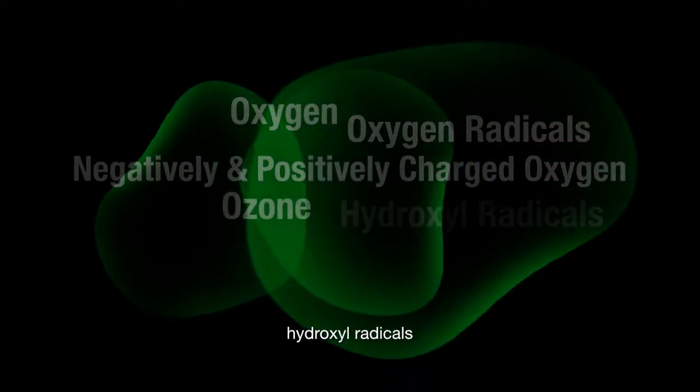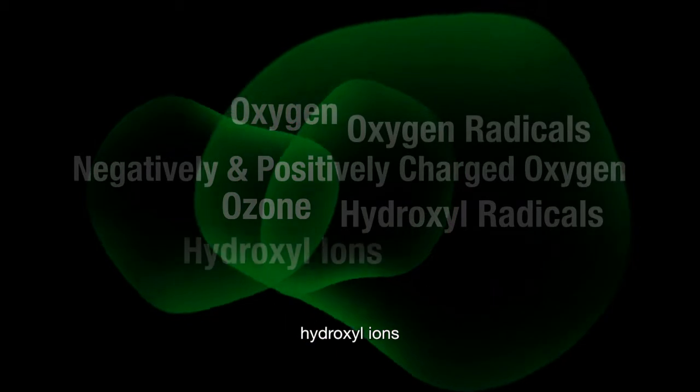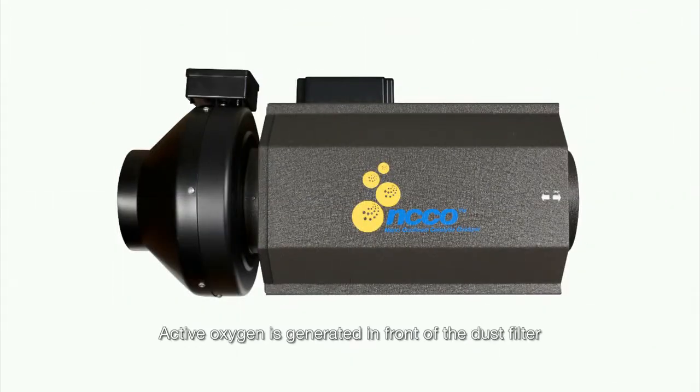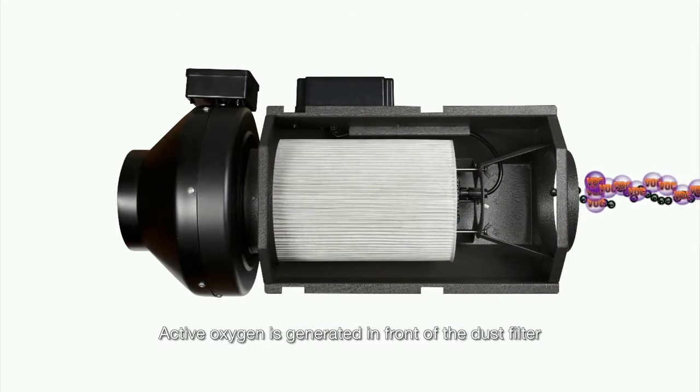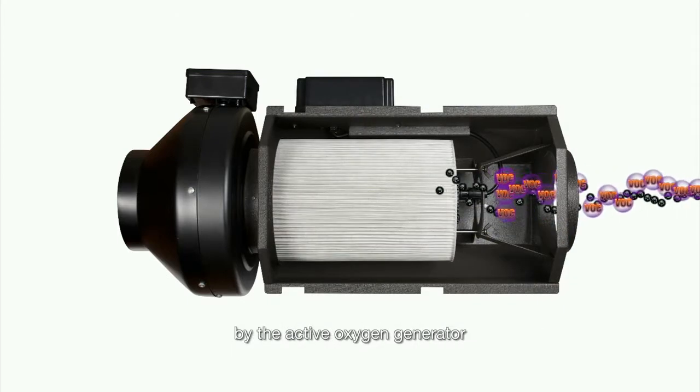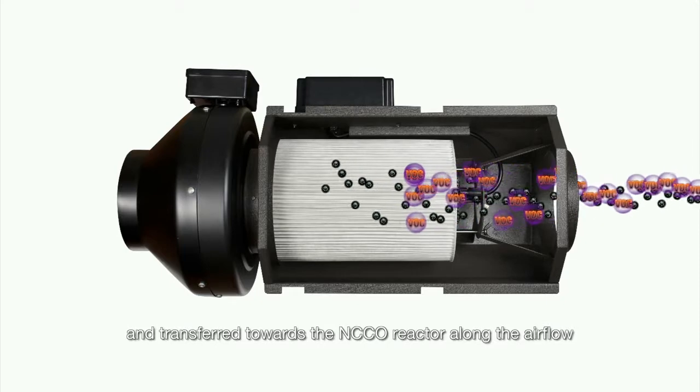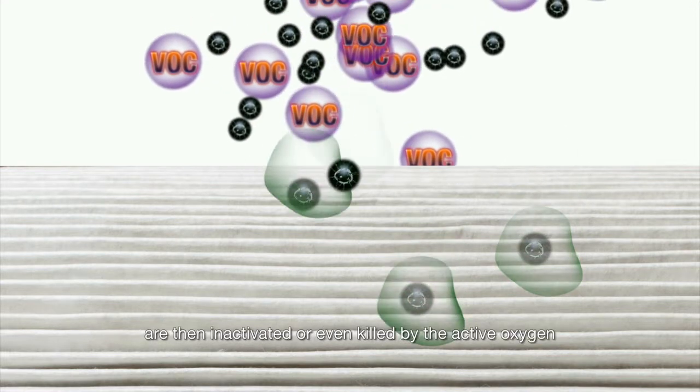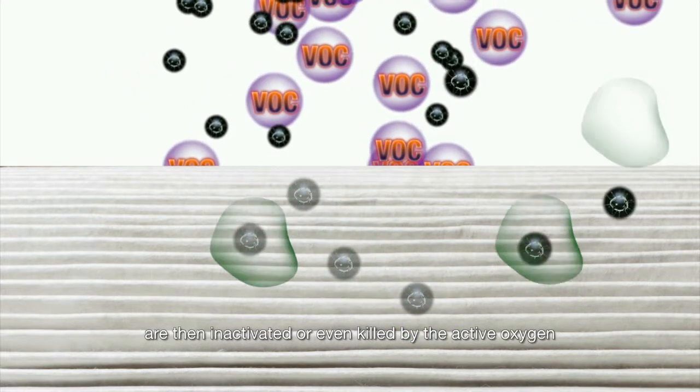...ozone, hydroxyl radicals, hydroxyl ions, and hydrogen peroxide. Active oxygen is generated in front of the dust filter by the active oxygen generator and transferred towards the NCCO reactor along the airflow. The trapped bacteria and viruses are then inactivated or killed by the active oxygen.